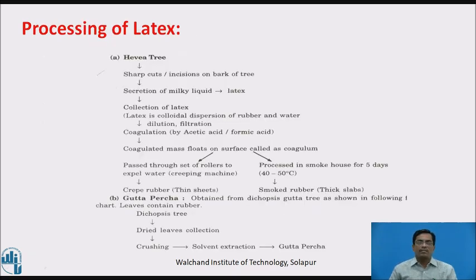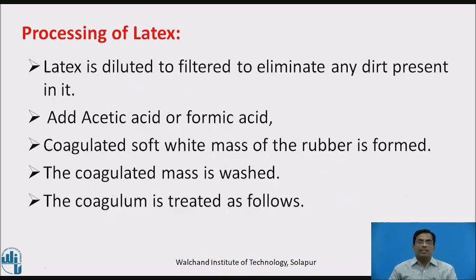Processing of latex. This flowchart explains the processing or extraction of rubber. On the bark of the tree, incisions are made, and through these incisions, a latex — a white milky juice — comes out. This latex is collected and processed further.